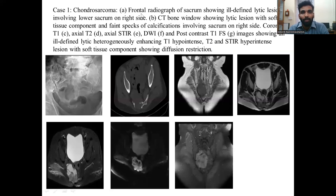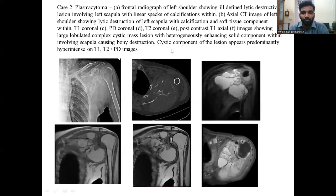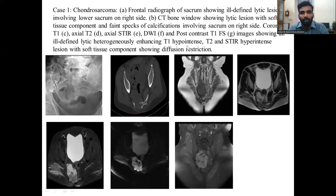Case 1 – Chondrosarcoma. Frontal radiograph of the sacrum shows an ill-defined lytic lesion involving the lower sacrum on the right side. CT bone window shows a lytic lesion with soft tissue component and faint specks of calcification involving the sacrum on the right side. Coronal T1, axial T2, axial STIR, and diffusion-weighted and post-contrast T1 fat-sat images show an ill-defined lytic heterogeneously enhancing T1 hypointense, T2 and STIR hyperintense lesion with soft tissue components showing diffusion restriction.